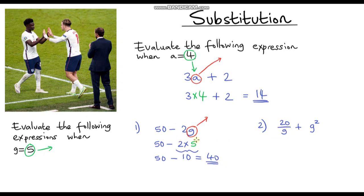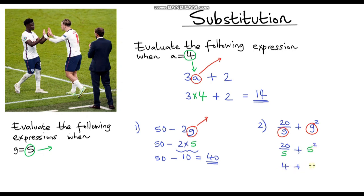Now looking at the second expression, again we're substituting g for the number 5. This time g appears twice in our expression, so every time we see a g we replace it with 5. So we're going to have 20 divided by 5, and then instead of g squared, it's going to be 5 squared. 20 divided by 5 is 4, and then we add on 5 squared, which is 25. So 4 plus 25 is 29 — that's my answer.